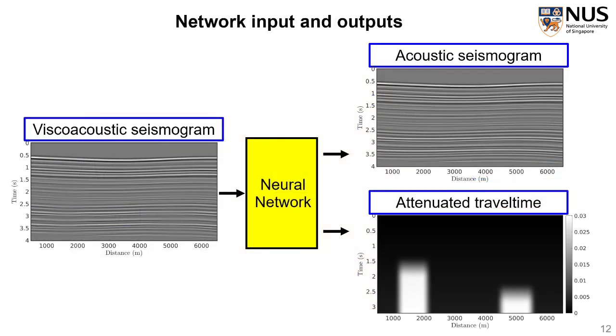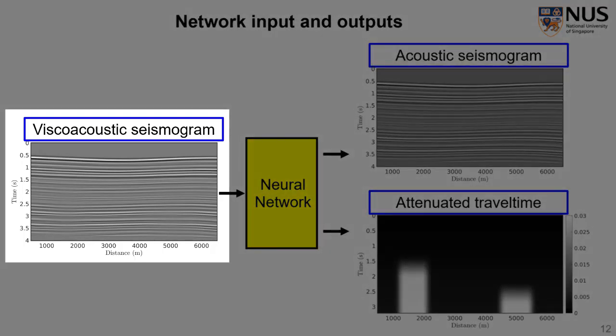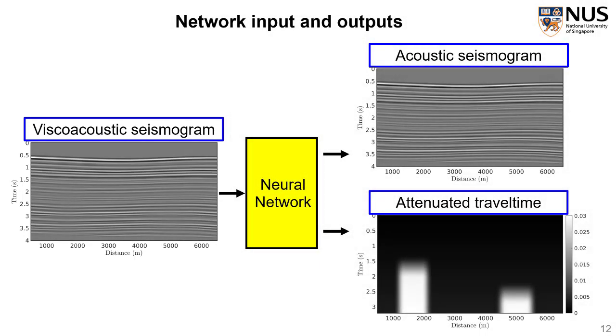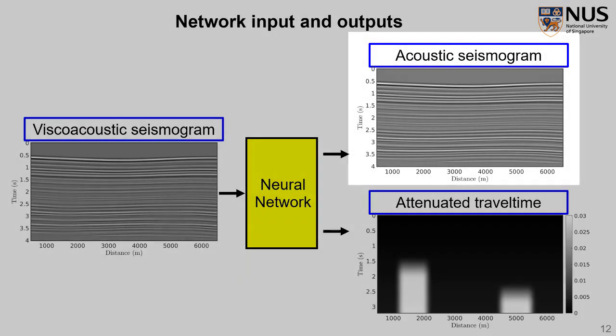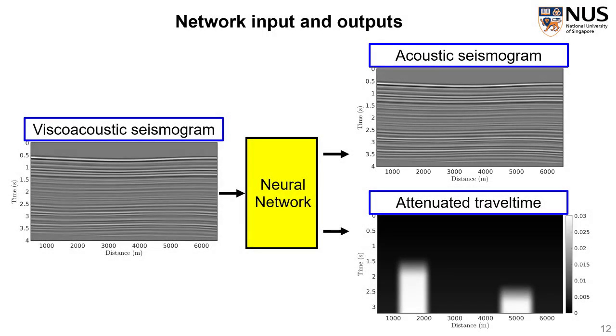The input and output for our neural network will be like this. Basically, we input the recorded waveform, which is the viscoacoustic seismogram, and then it outputs the estimated attenuated travel time and correspondingly the compensated acoustic seismogram. The three of them are all defined in the zero-offset domain because in the zero-offset domain, the horizontal continuity is much better. However, such complete zero-offset domain seismograms sometimes may contain hundreds of traces with thousands of samples within each trace. In order to reduce the computational cost and memory cost during training and utilizing of the neural network, we choose to work with small patches.